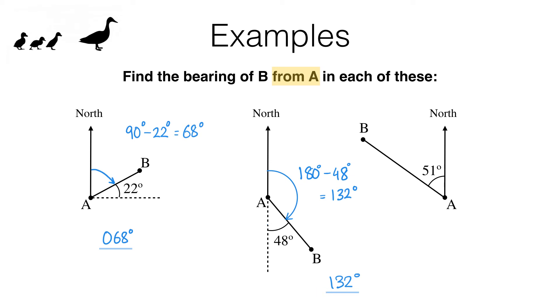Pause the video and have a go at the last one for yourself. Here's what you should have found. The angle we're looking for is this one here, clockwise from north. We know a full turn is 360 degrees. We know that this part is 51 degrees, so the angle we want is 360 minus 51, and that gives us 309. So the bearing we're looking for is 309 degrees.